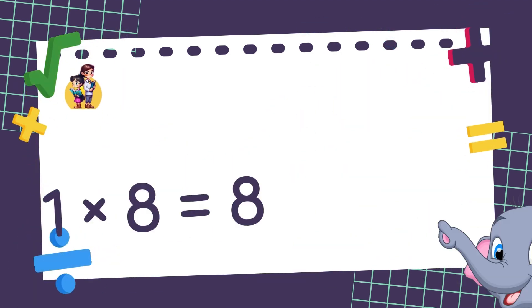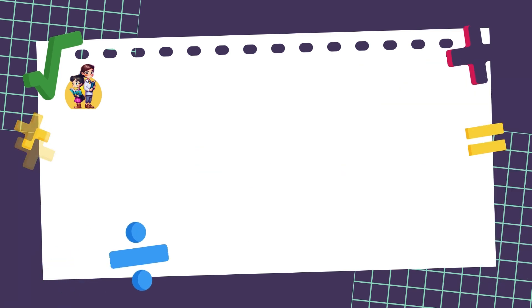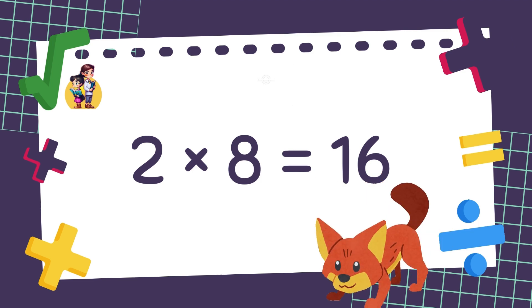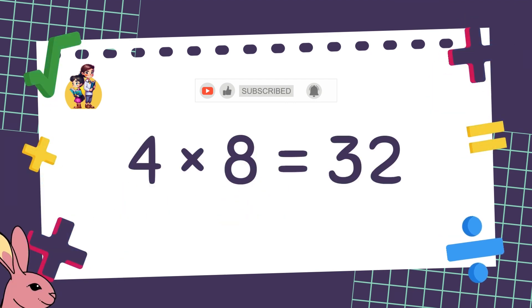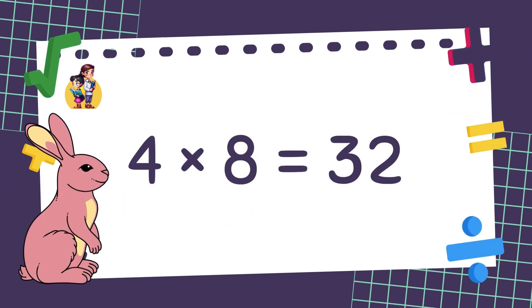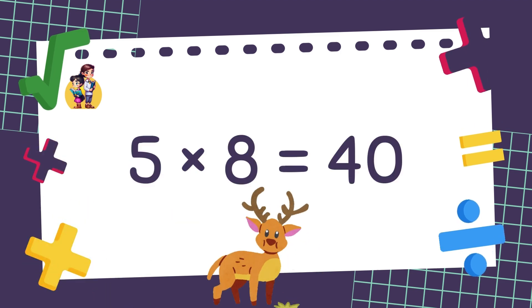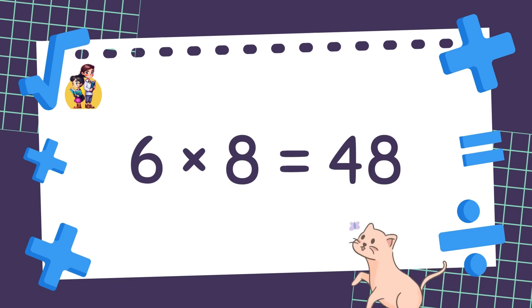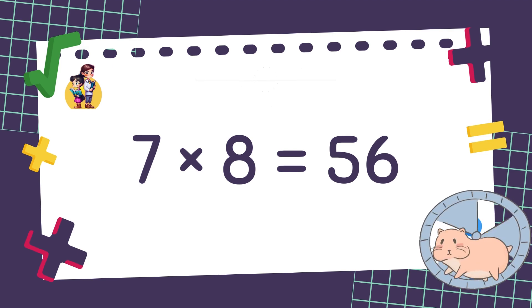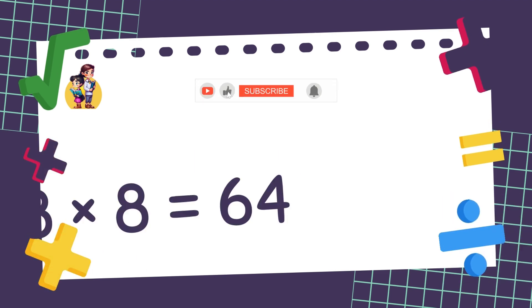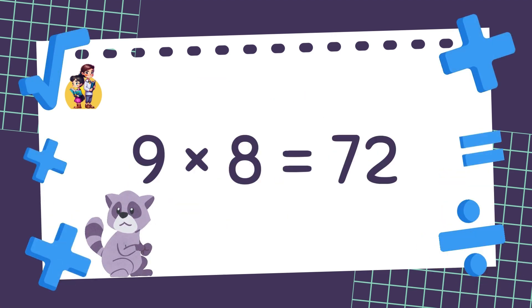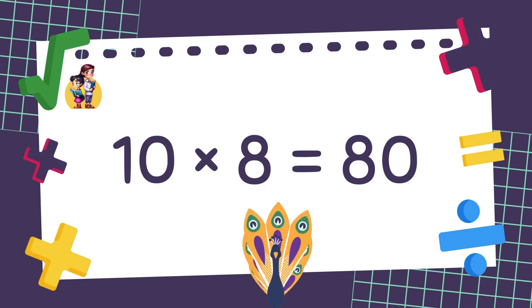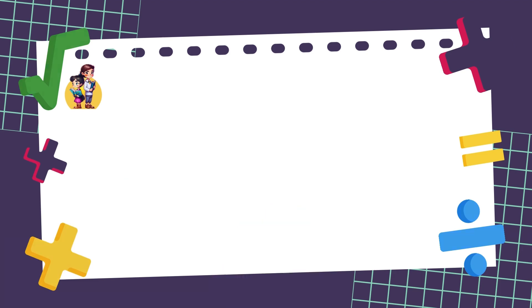1 times 8 is equal to 8. 2 times 8 is equal to 16. 3 times 8 is equal to 24. 4 times 8 is equal to 32. 5 times 8 is equal to 40. 6 times 8 is equal to 48. 7 times 8 is equal to 56. 8 times 8 is equal to 64. 9 times 8 is equal to 72. 10 times 8 is equal to 80. Well done!